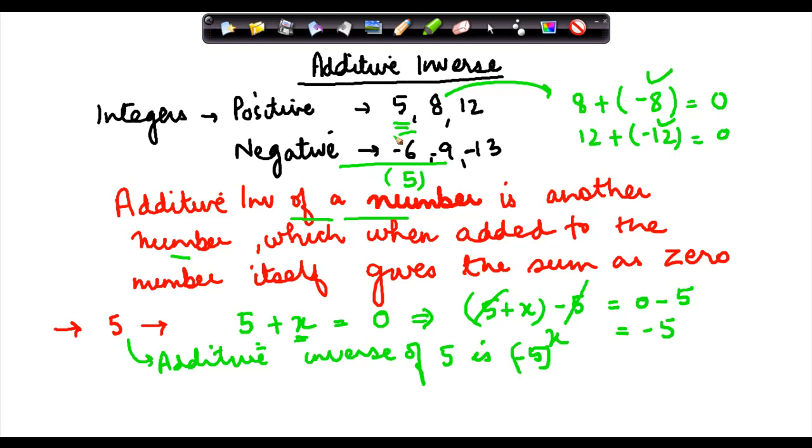Now how about minus 6? Again, minus 6 plus x equals zero. To make this side zero, I add 6 to both sides. This 6 and this 6 will cancel. So x equals 6. The Additive Inverse of minus 6 is 6.